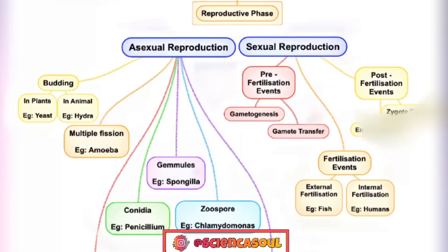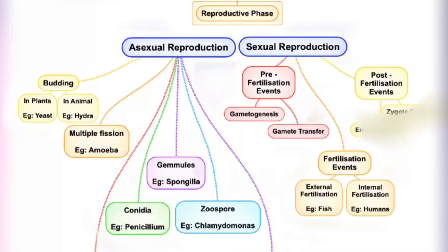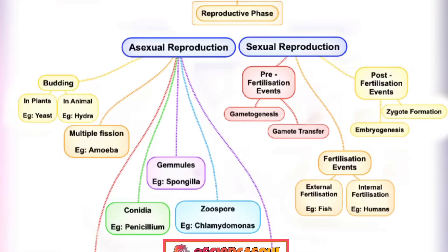Fertilization events also consist of two parts: external fertilization and internal fertilization. External fertilization occurs in most aquatic organisms such as the majority of algae, fishes, and amphibians. Internal fertilization occurs in many terrestrial organisms — for example, fungi, higher animals such as reptiles, birds, and mammals, and in the majority of plants such as bryophytes, pteridophytes, gymnosperms, and angiosperms.